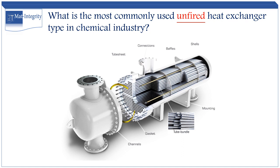The tube bundle also contains baffles. These baffles are thin but stiff plates installed to maintain distances between tubes and direct the shell fluid flow. The tube bundle assembly is usually inserted inside the shell until the tube sheet connects with the flanged end of the shell.